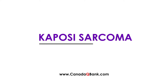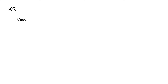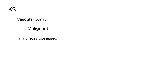Kaposi sarcoma, abbreviated KS, is a vascular tumor. This tumor is malignant, and most commonly it occurs in patients who are immunosuppressed. When an immunosuppressed patient is infected with a certain virus, they will most likely develop Kaposi sarcoma. That virus is human herpes virus type 8, abbreviated HHV8.